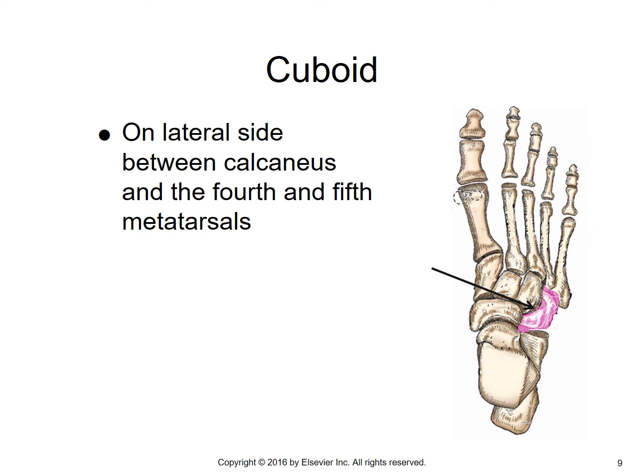The cuboid bone is called so because it's roughly cube-shaped. It lies on the lateral side of the foot — you can see it there in purple. It has the calcaneus behind it and the fourth and fifth metatarsals in front of it.